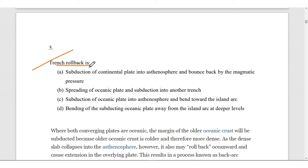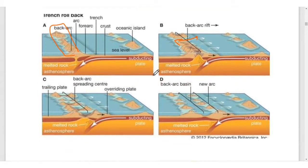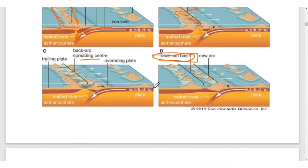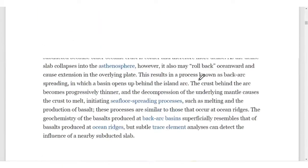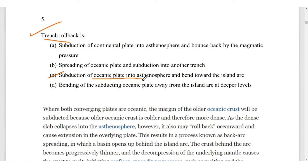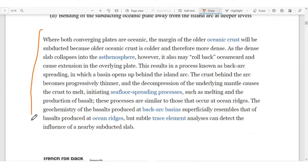Next is trench rollback. First we will see how this trench rollback looks like. It is basically the formation of back arc basin. Here two oceanic plates are there, one is subducting another in the asthenosphere and here back arc will create. Next step is rifting will happen in the back arc and during the rifting, spreading center will be created and ultimately back arc basin will form. It is the subduction of oceanic plate into the asthenosphere and bend towards the island arc.